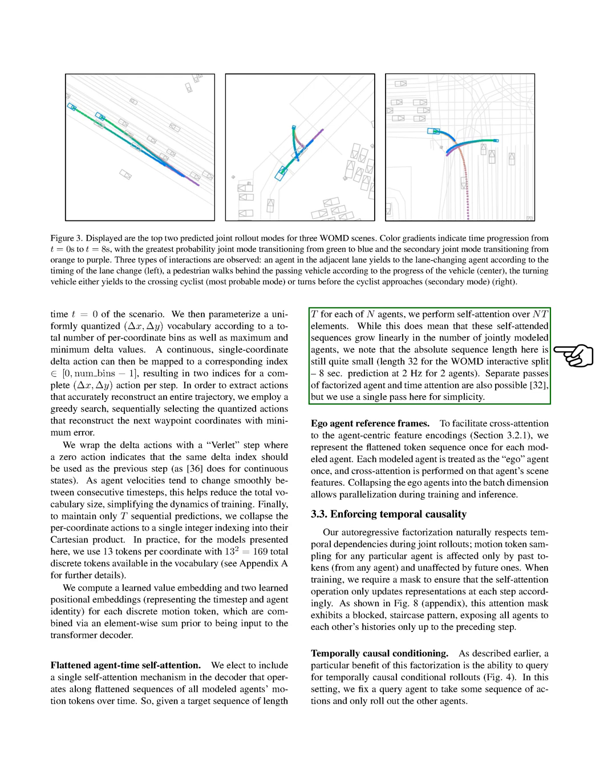Section Ego Agent Reference Frames. We're going to discuss a few key concepts from the paper, starting with the idea of ego agent reference frames. In our model, we represent each agent in the scene from their own perspective, treating them as the central or ego agent. This allows us to focus on the features of the scene that are relevant to each agent. By grouping these ego agents together, we can process them simultaneously during training and inference, which speeds up the process.